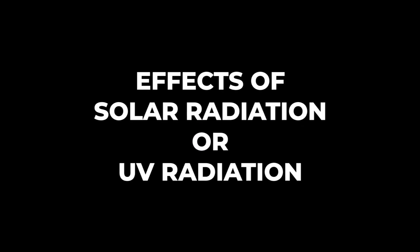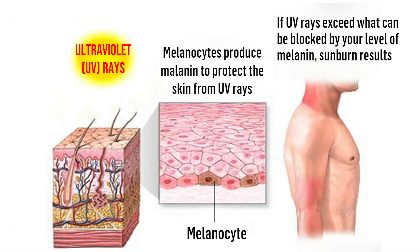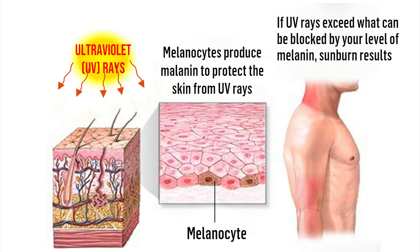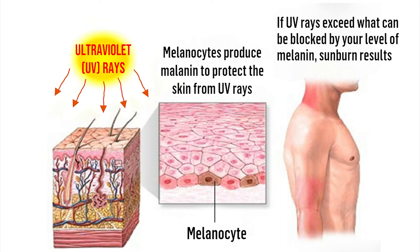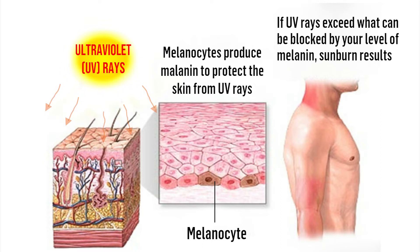What are the effects of solar radiation or ultraviolet radiation? Invisible light forms a part of the electromagnetic spectrum immediately beyond the violet end of the visible light spectrum, i.e., between visible light and X-rays.